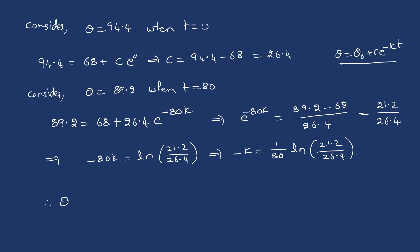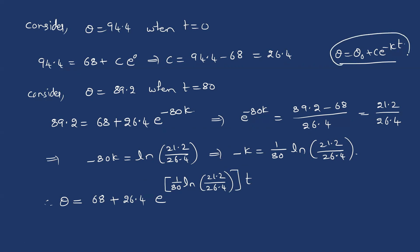Now, substituting both values of C and k into the temperature equation, we get: θ = 68 + 26.4·e^[(t/80)·ln(21.2/26.4)]. This is the relation we will use to calculate the temperature of the body at any time t.